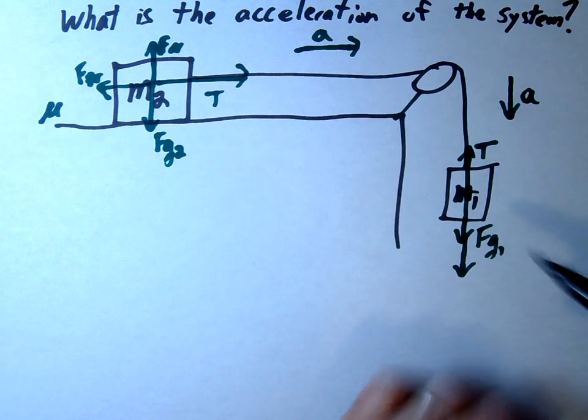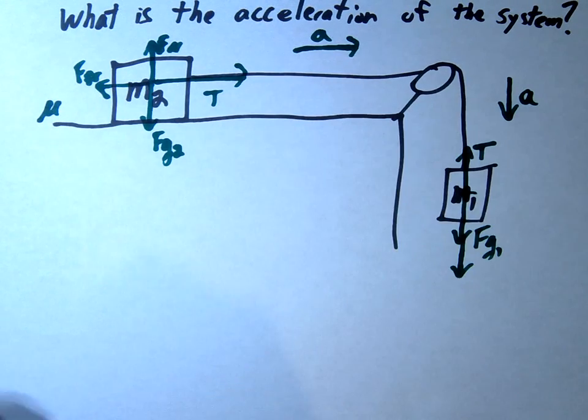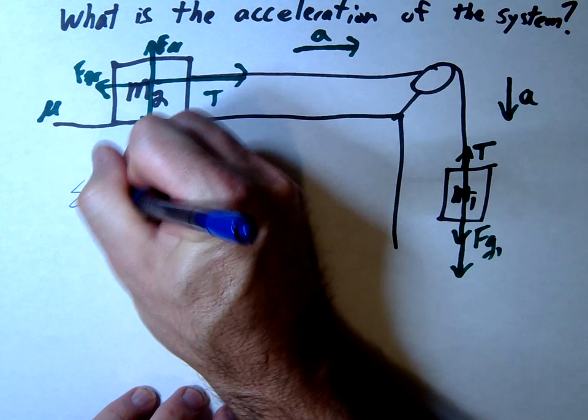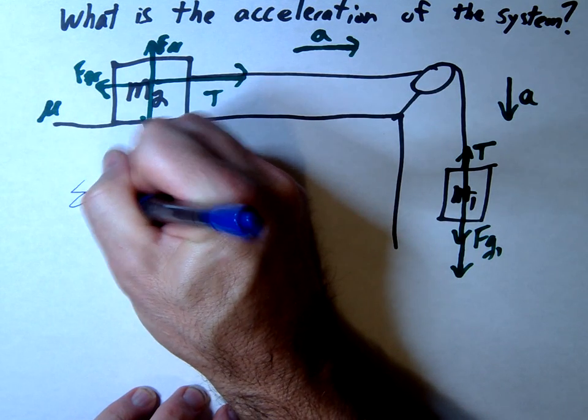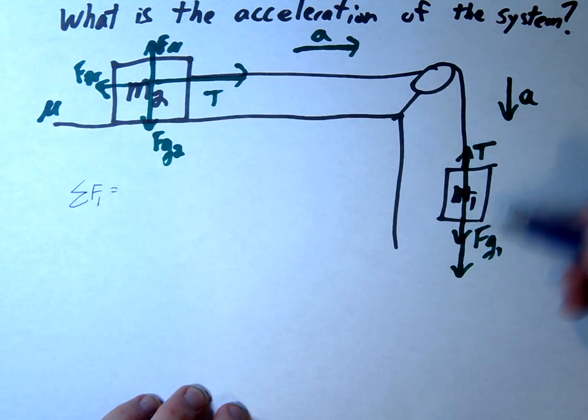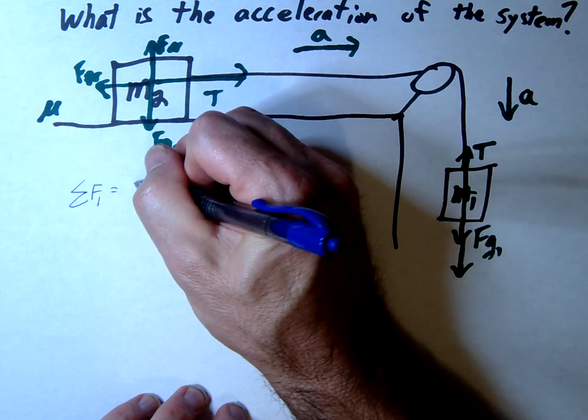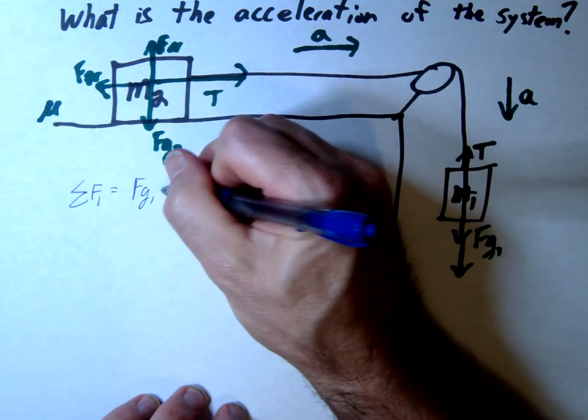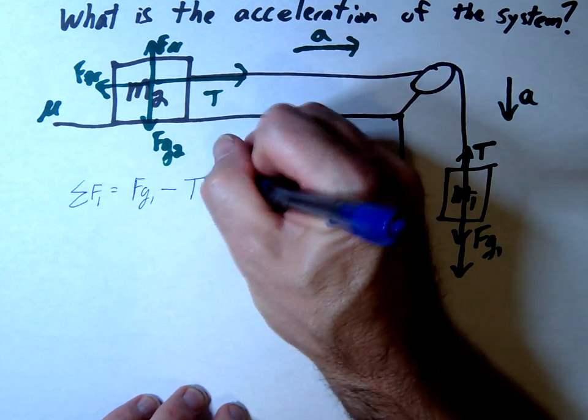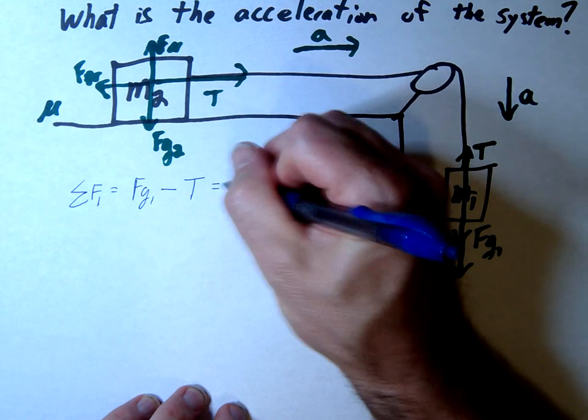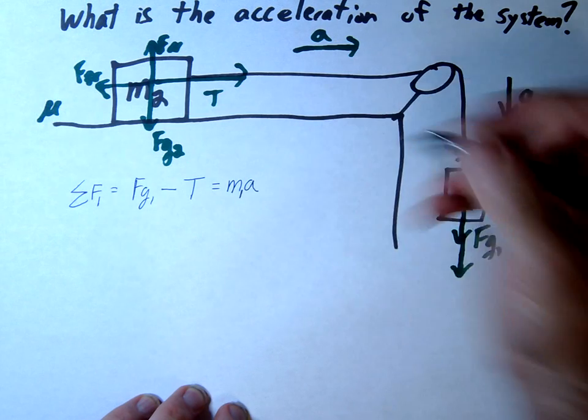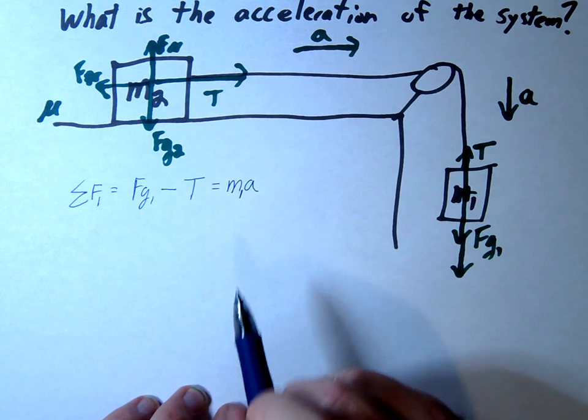Let's write the summation for each mass. For mass one, there's only one direction to consider. We'll make FG1 positive going down, subtract the tension pulling up, and set that equal to m1a. Make sure to subscript correctly.